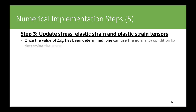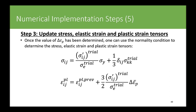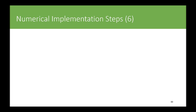Once Δε^p (the equivalent plastic strain increment) is determined, we use the normality condition to update the stress tensor as a function of the deviatoric trial stress, equivalent trial stress, yield strength σ_y, Kronecker delta, and the volumetric part of the trial stress. We also update the elastic strain tensor and plastic strain tensor. In the isotropic hardening case (later parts), both the yield strength and the hardening modulus will not be constant.